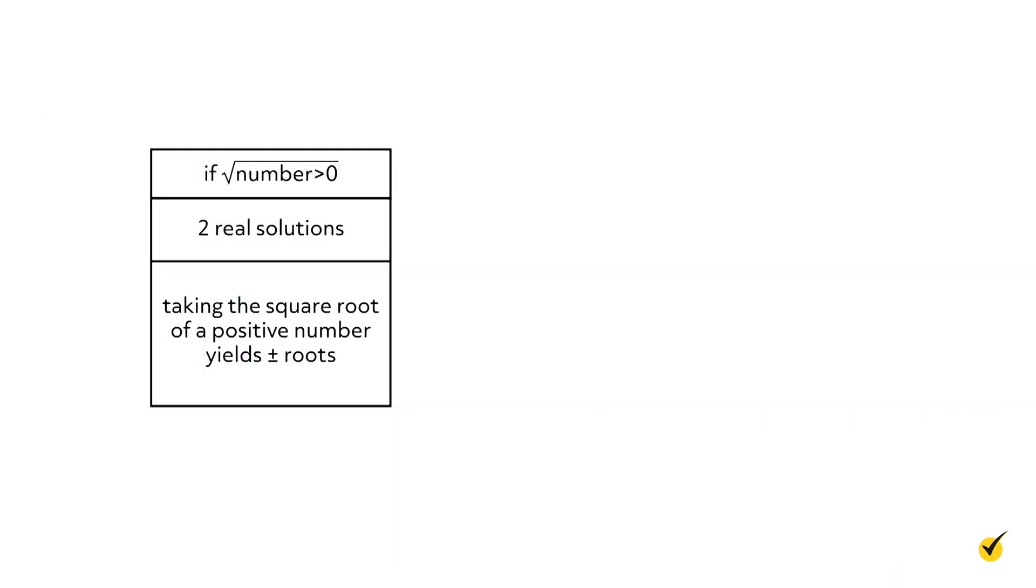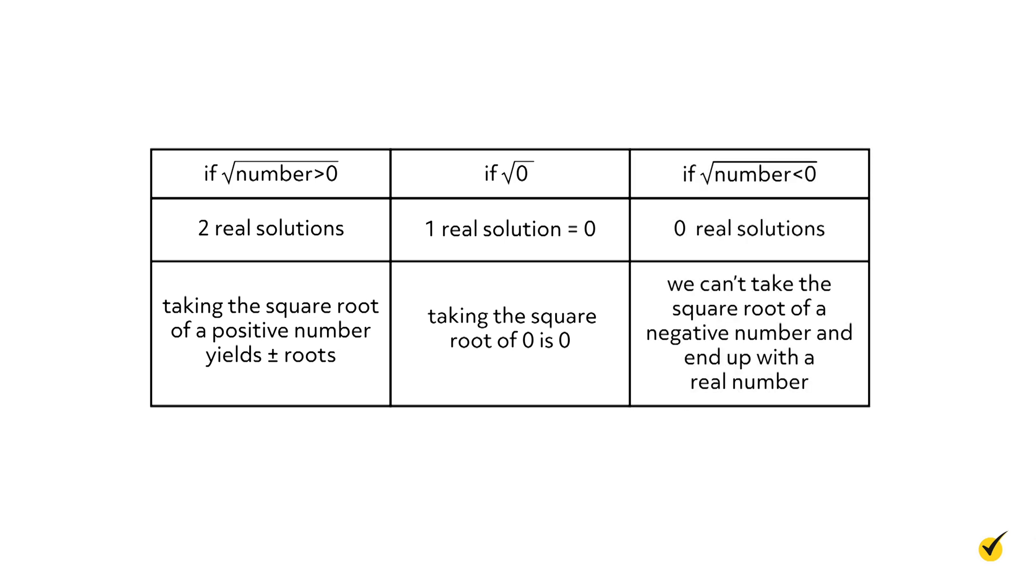Now let's consider square roots in general. If the square root of a number is greater than zero, there are two real solutions. Taking the square root of a positive number yields positive and negative roots. If the square root is zero, there is one real solution: zero. Taking the square root of zero is zero. If the square root of a number is less than zero, there are zero real solutions. We can't take the square root of a negative number and end up with a real number.